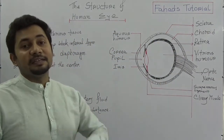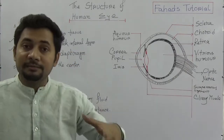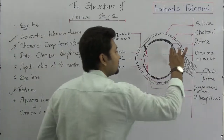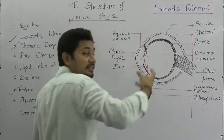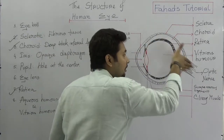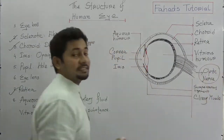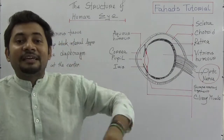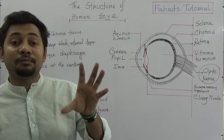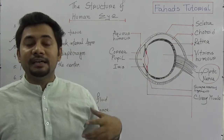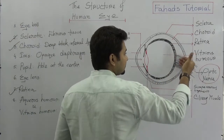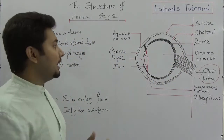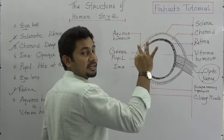The retina is the light-sensitive layer where the image will be formed. When I explain how the human eye sees and how an image is formed, you will understand that the image forms on this layer. Through the optic nerve, that light sensitivity will be transmitted, and our brain will interpret what we are watching. The optic nerve is responsible for vision and is linked directly to the retina.